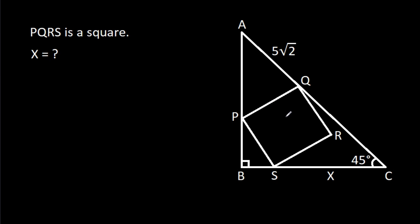In this video, we have been given that PQRS is a square and AQ is 5 root 2, and CS is x. Then we have to find x.